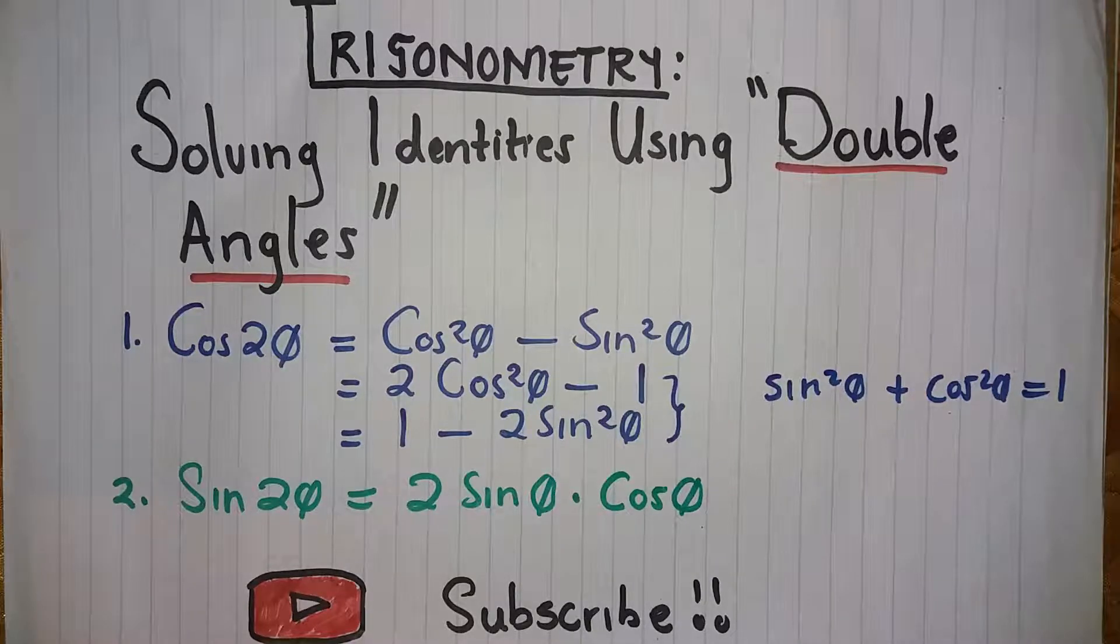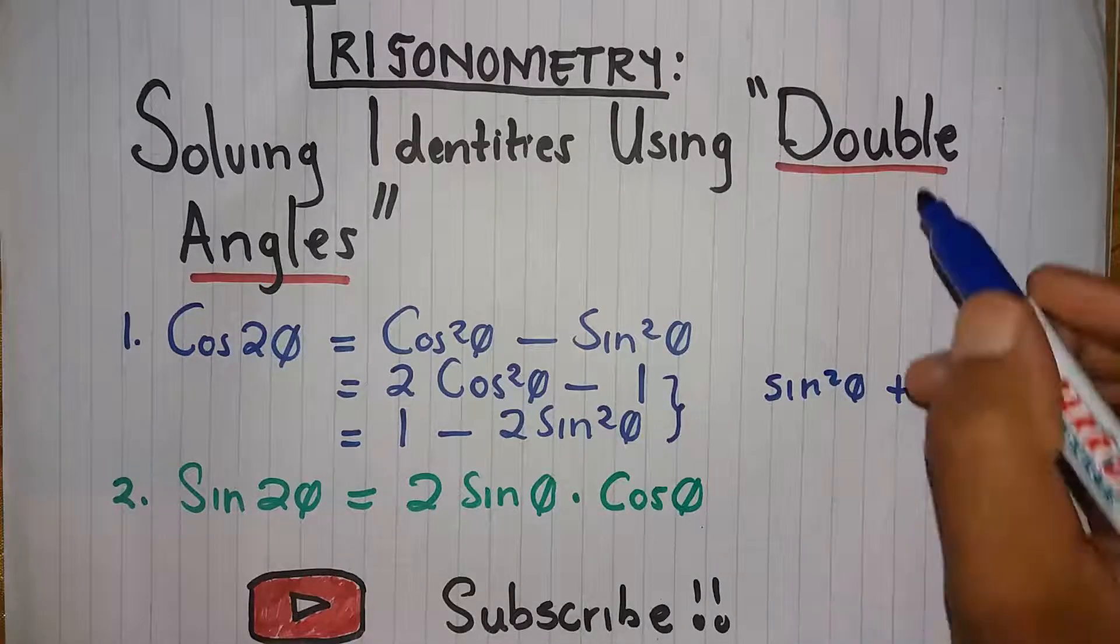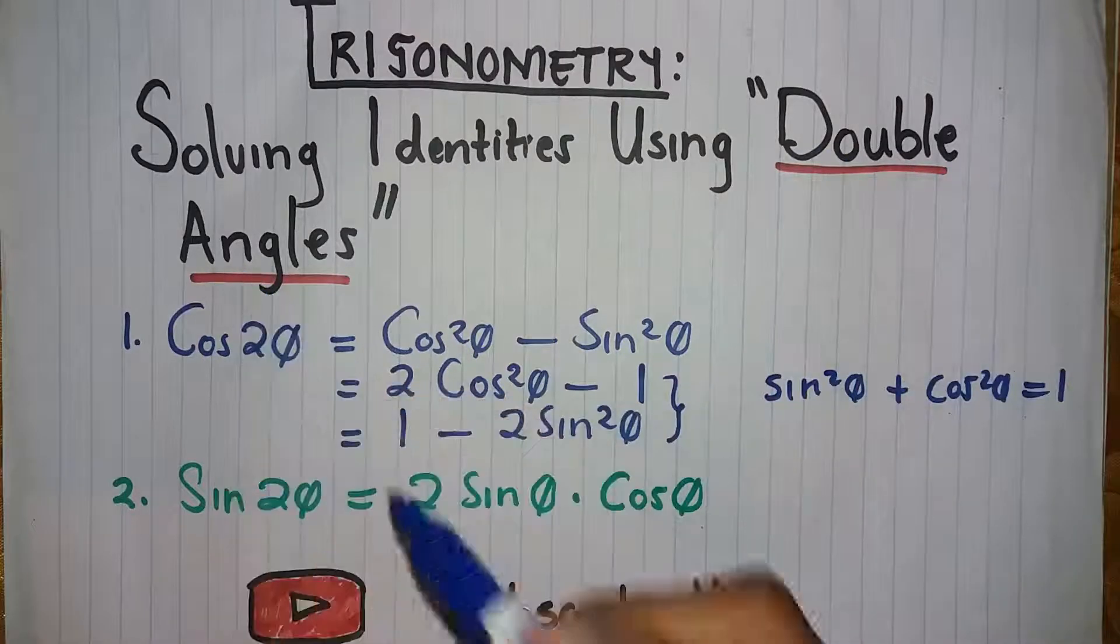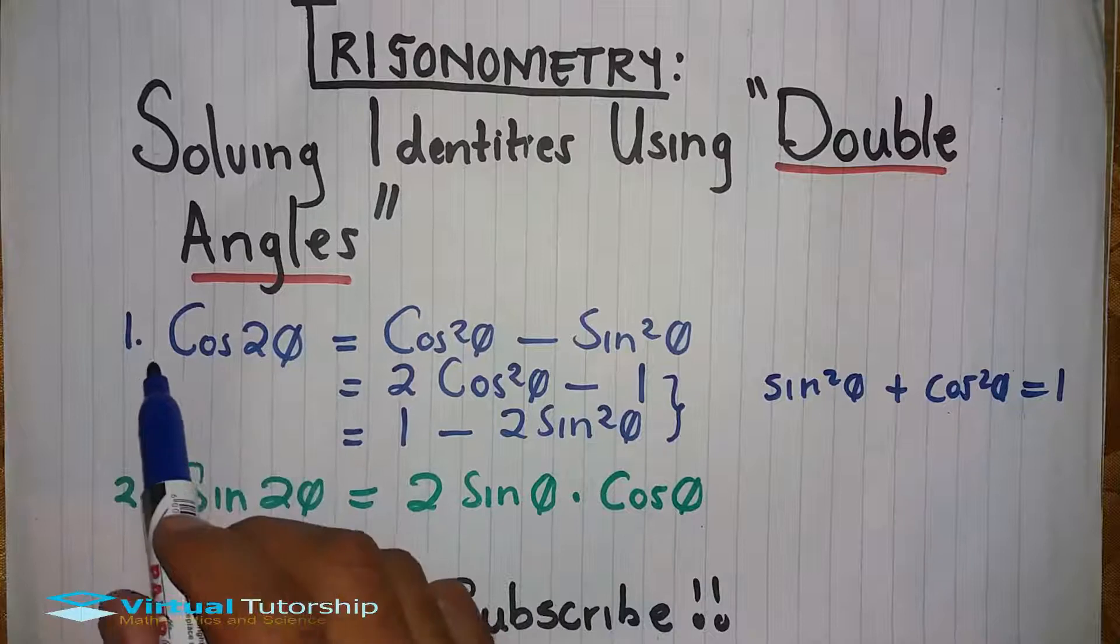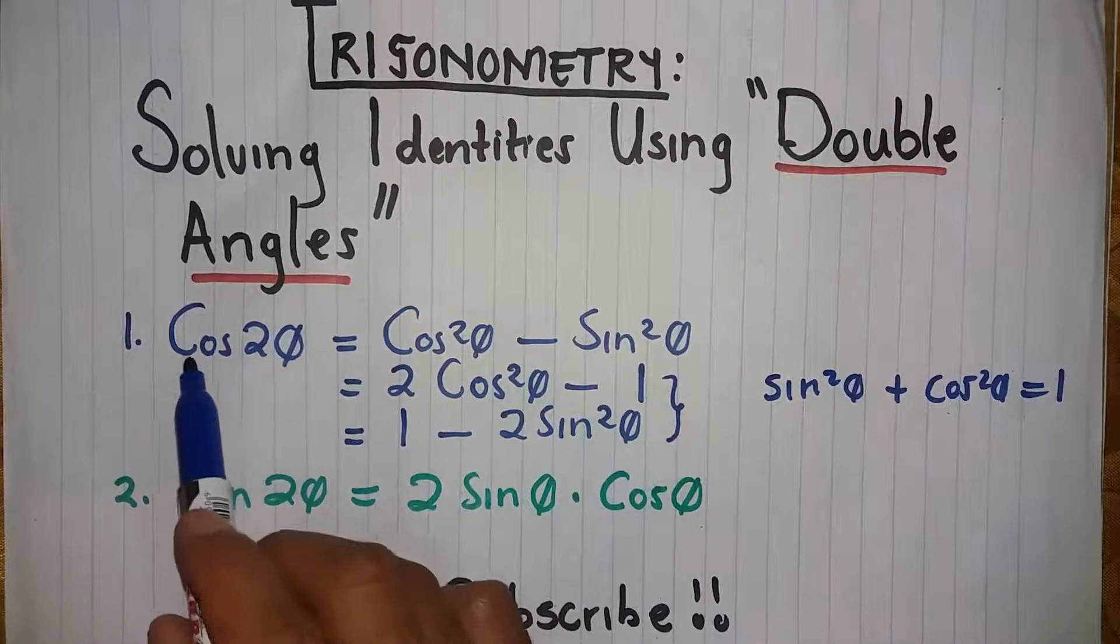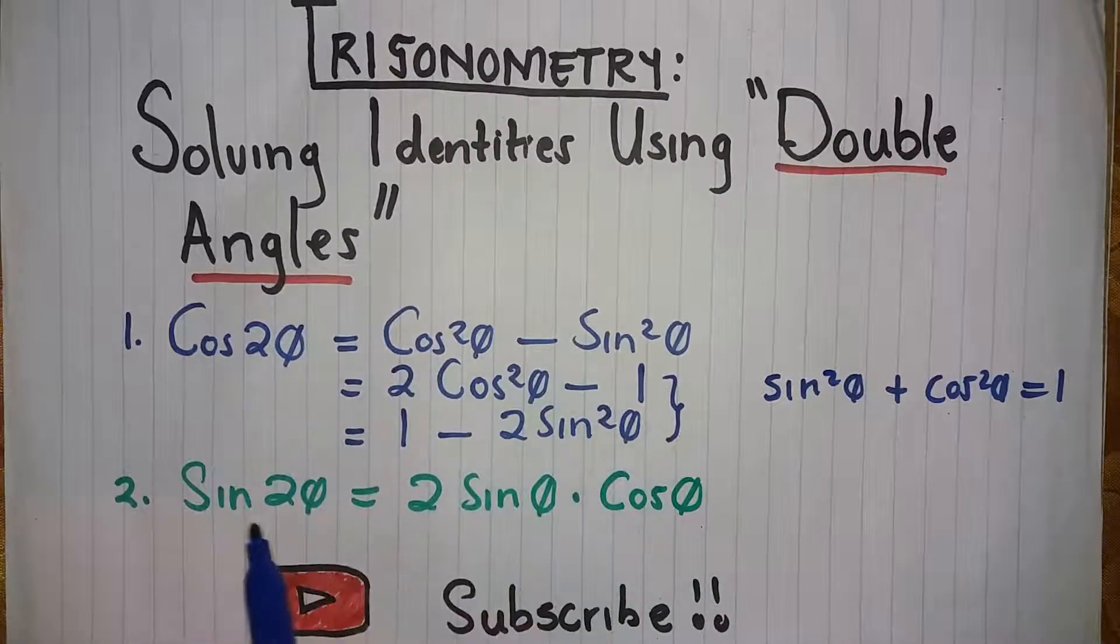This is a lesson on finding trigonometric identities, but this time you can see that you have double angles. You have double angles for cos and sine.